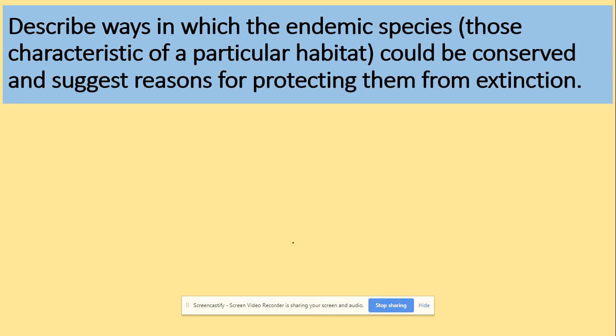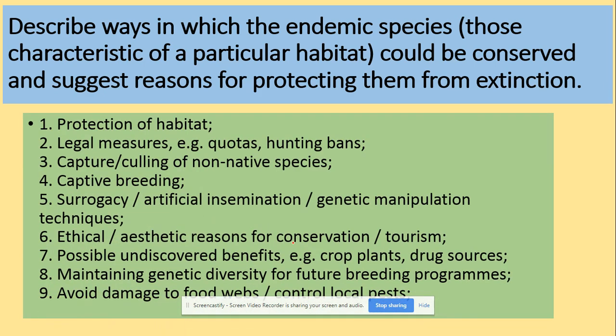Describe ways in which the endemic species could be conserved and suggest reasons for protecting them. So here again few suggestions: protect habitats, illegal measurements, capture, breeding, artificial insemination, ethical issues, possible benefits, maintaining genetic diversity, and avoid damage of food webs. As you can see, common answers, especially about the genetic diversity, food webs, and breeding are coming along.